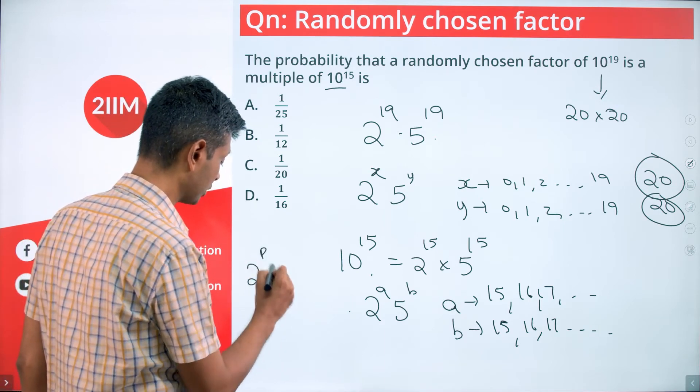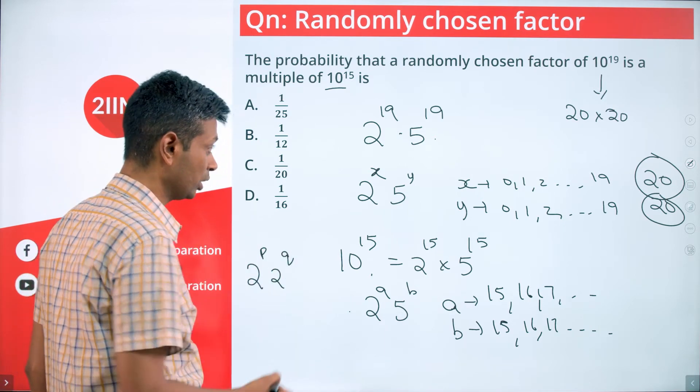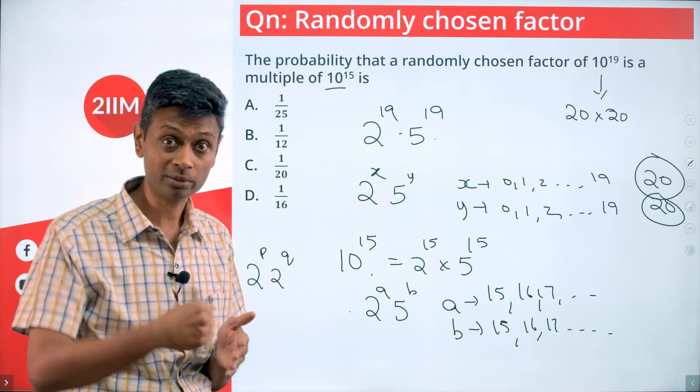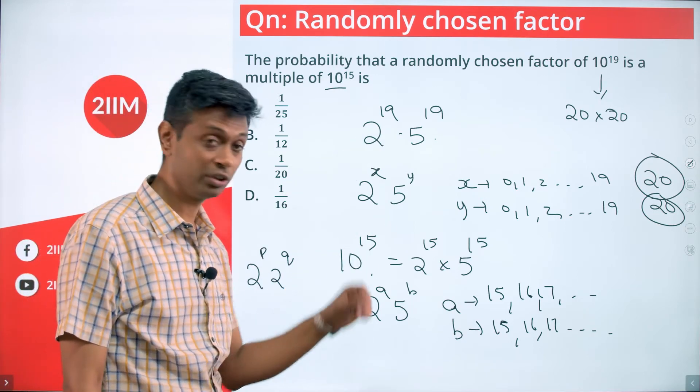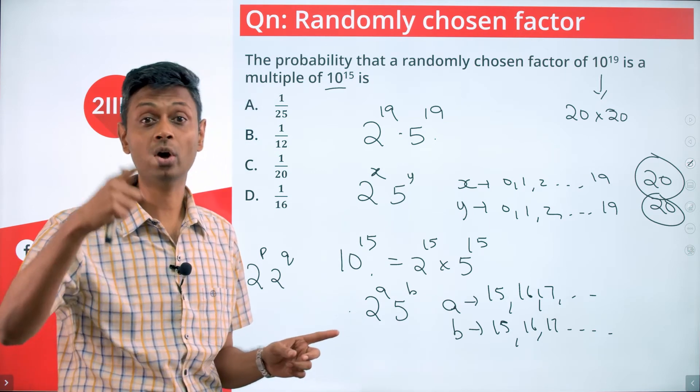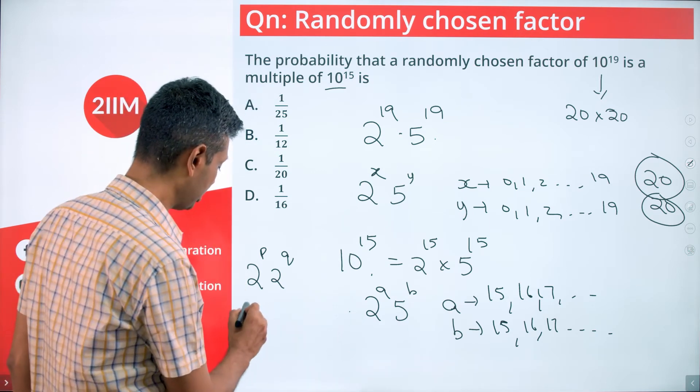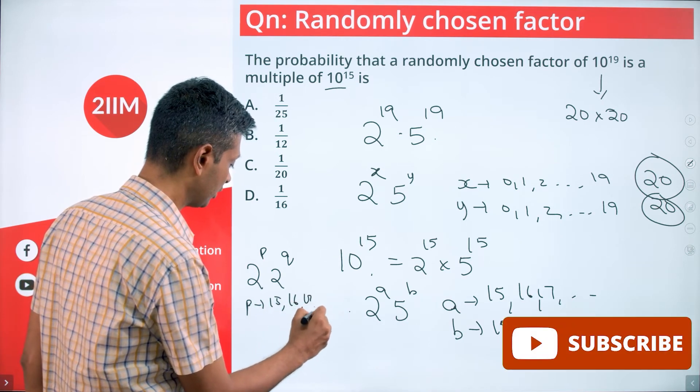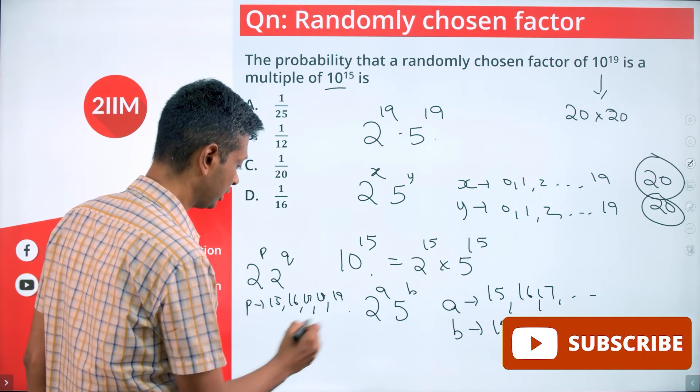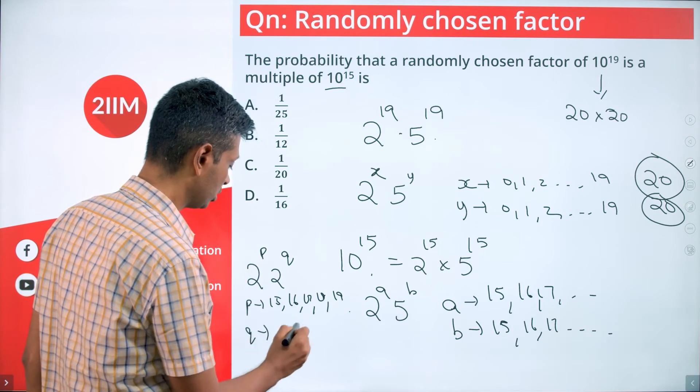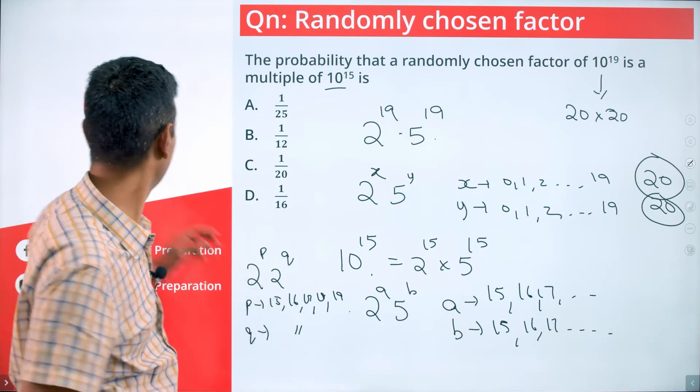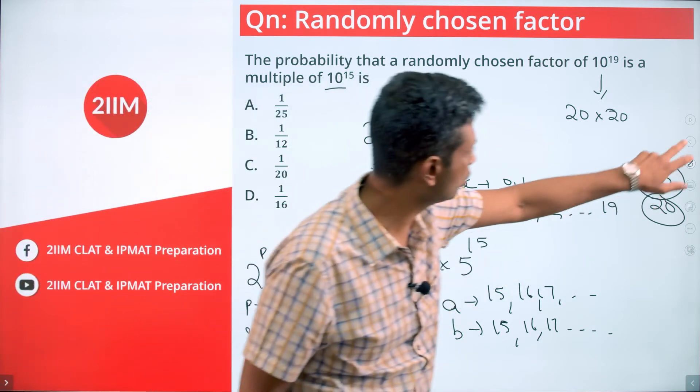So we are looking for numbers of the form 2 power p into 5 power q. In order to be a factor of this, p and q will have to be 19 or lower. In order to be a multiple of this, p and q will have to be 15 or higher. Or p takes values 15, 16, 17, 18, 19. q takes a similar set of values 15, 16, 17, 18, 19.